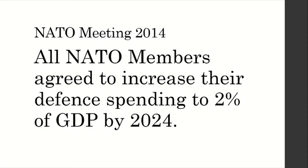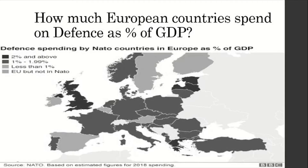Looking at the data on how much European countries spend on defense as a percent of GDP, there are only four countries highlighted darker on the map: Greece, United Kingdom, Estonia, and Latvia — the only countries which spend more than 2% of their GDP. The US currently spends more than 3.5% of its GDP on defense, which is almost the highest defense spending in the world.